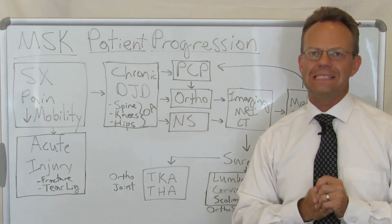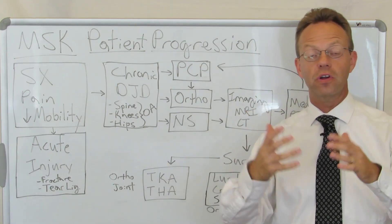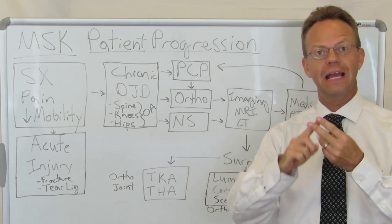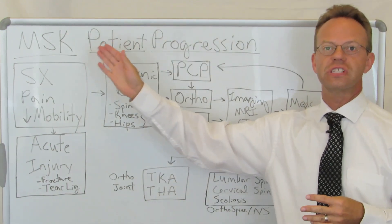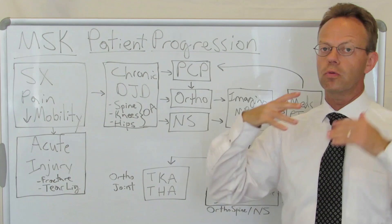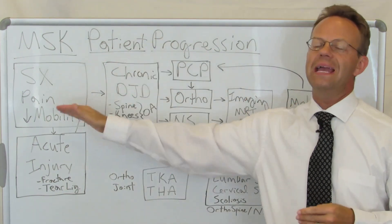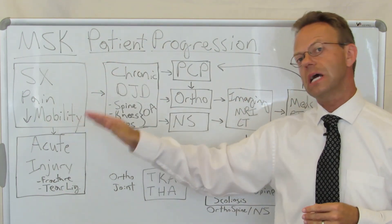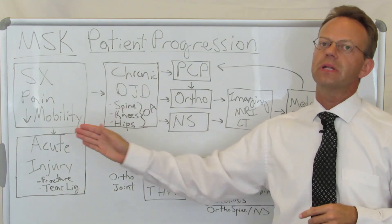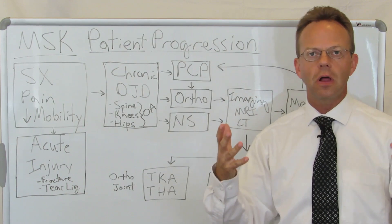This is the last in a series of three major diagnostic categories for employers — the first one being cancer, the second one being cardiac, and now the third one being musculoskeletal. Musculoskeletal symptoms will initially manifest themselves as pain and decreased mobility. Sometimes it's only pain, sometimes it's only decreased mobility, but typically it's a combination of the two, and that's a big deal.